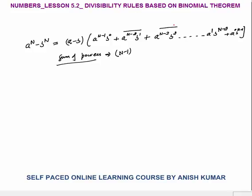The pattern is that the power of a keeps decreasing and the power of b keeps increasing, until the maximum power of b becomes n minus 1. This is the binomial theorem.